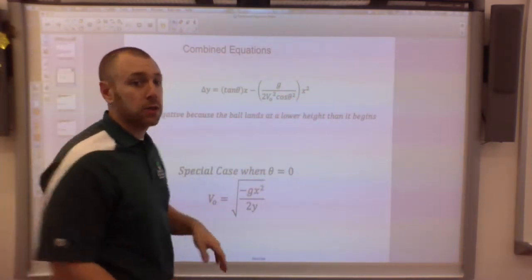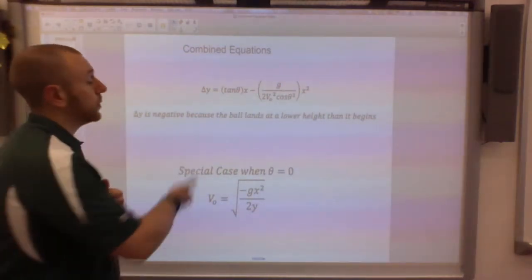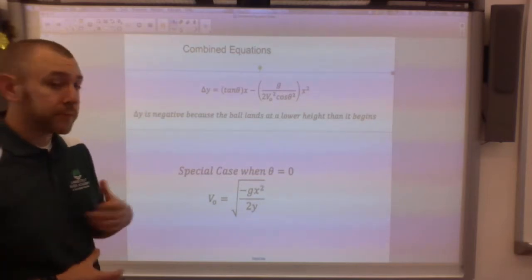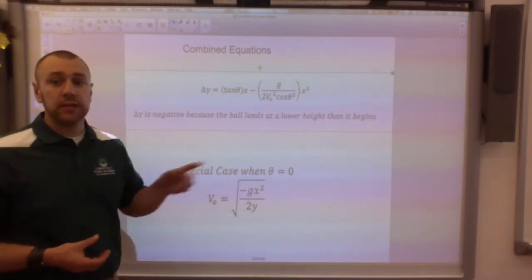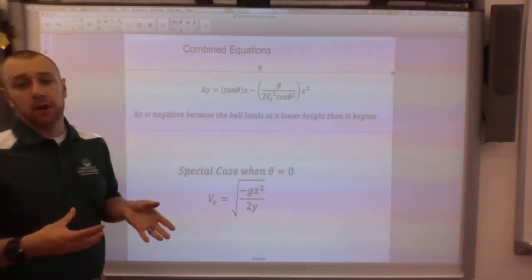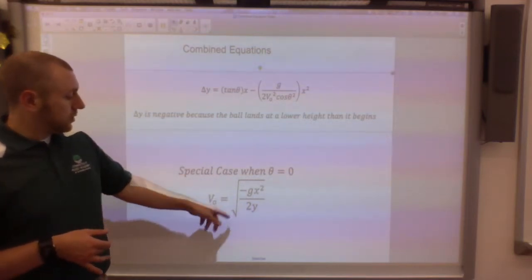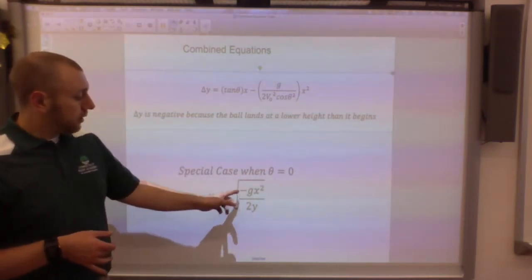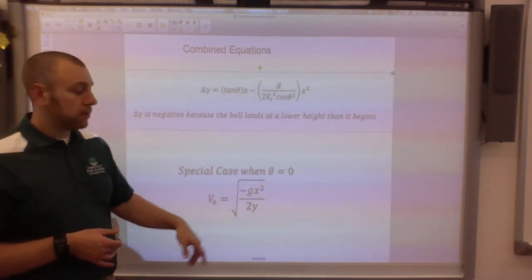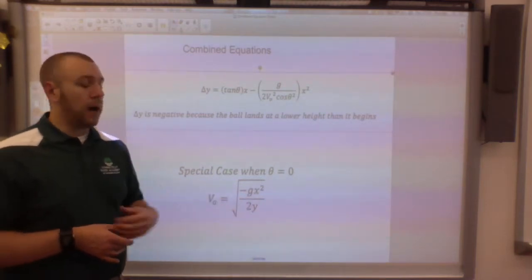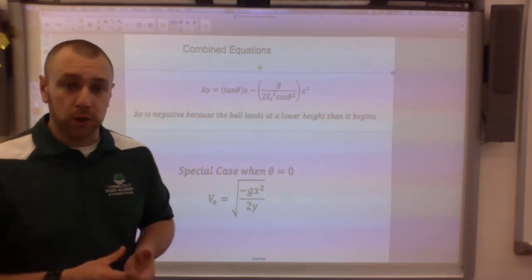It's a quadratic equation so we need an x squared, an x, and a c value. Our c value is going to be that change in y. The special case that we're going to be using to predict our initial velocity for our device is: initial velocity equals the square root of negative g x squared over two y.